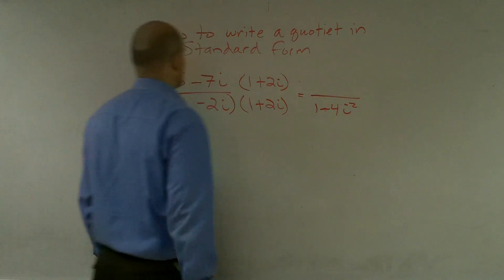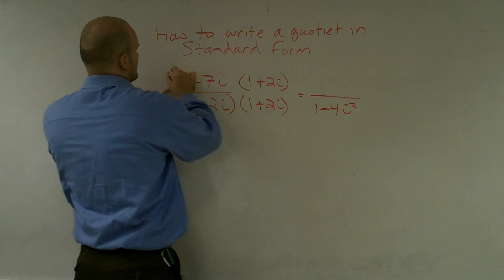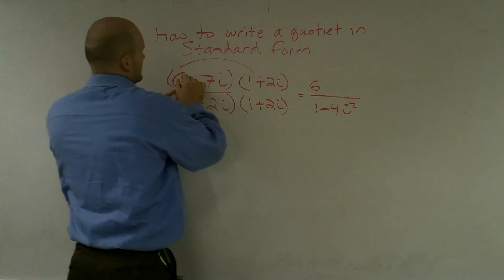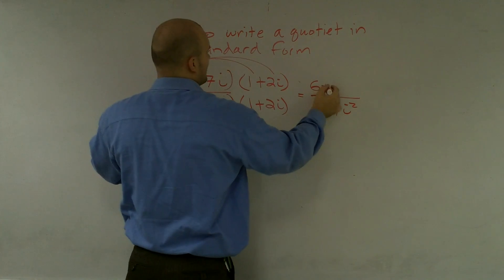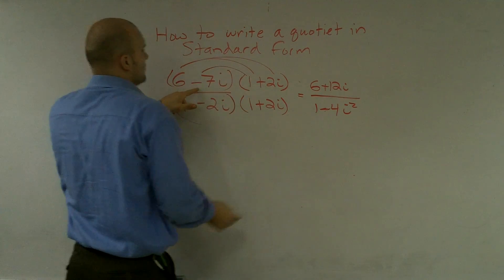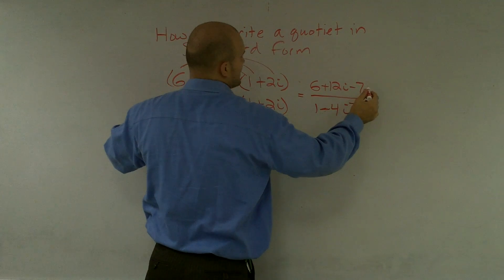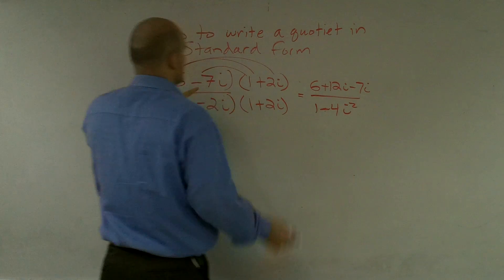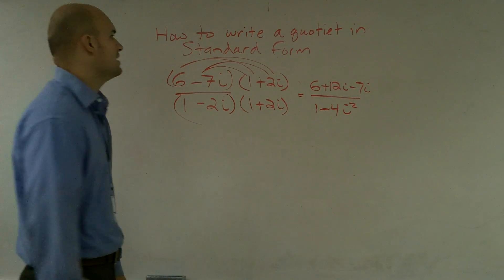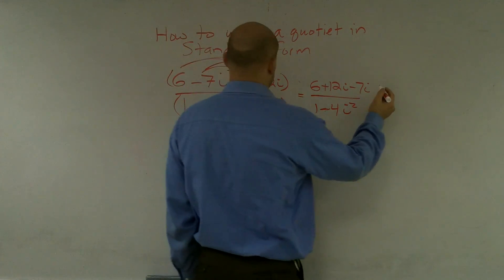Then let's go ahead and multiply on the top. Up top we have 6 times 1, which is 6, 6 times 2i, which is 12i. Negative 7i times 1, which is negative 7i. And then negative 7i times 2i is going to be negative 14i squared.